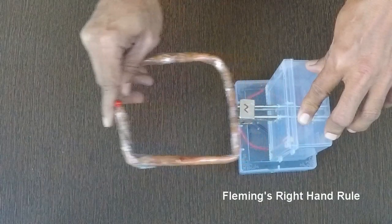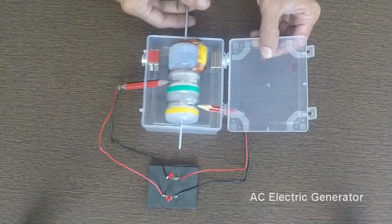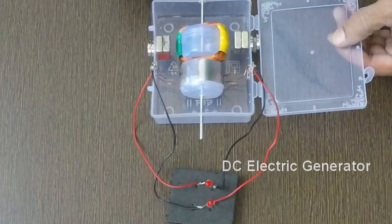We learned about the nature of induced current with the help of Fleming's right hand rule, as well as AC and DC electric generators.